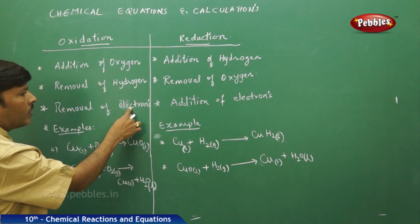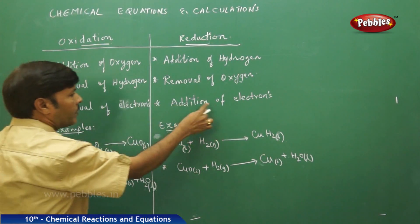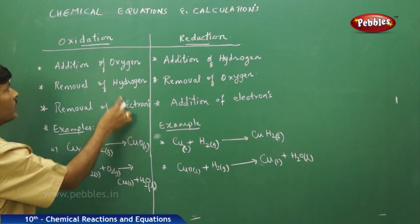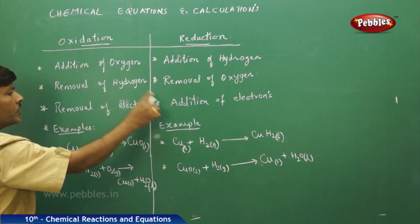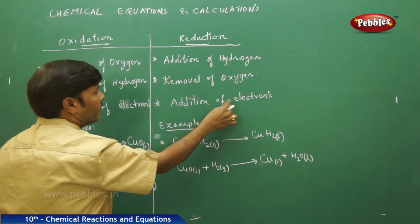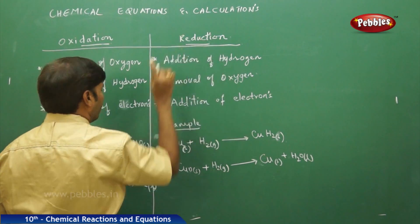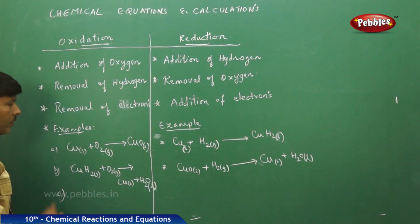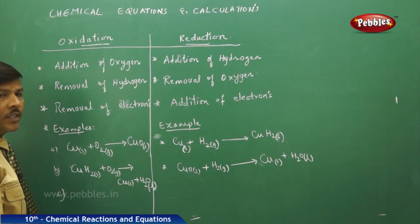Now, removal of electrons and addition of electrons: removal of electrons in the case of oxidation, addition of electrons in the case of reduction — these also need justification.